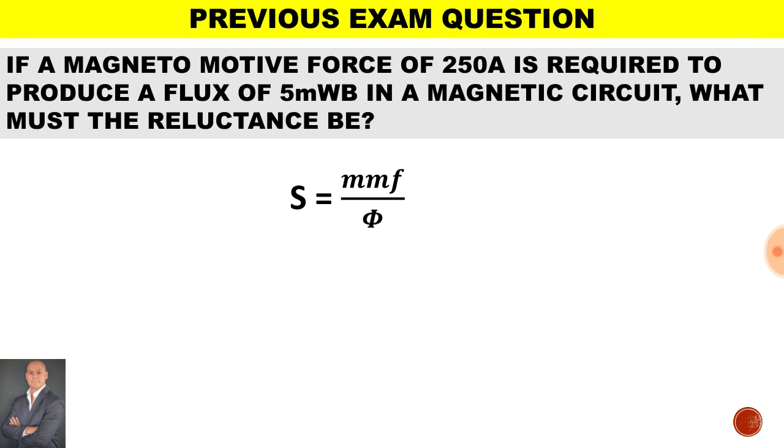Let's look at a past exam question. If a magnetomotive force of 250 amps is required to produce a flux of 5 milliweber in a magnetic circuit, what must the reluctance be?